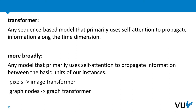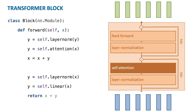The main strategy people tend to use to build transformers is to define a transformer block, which is a set of operations wired together in a certain way, and then repeat that transformer block a number of times. The exact architecture of a transformer block differs from model to model, but in most cases it looks something like this. The block takes in an input sequence, feeds it through layer normalization, then through self-attention. Around these two operations there is a residual connection, after which we see another layer normalization and a feed-forward layer with another residual connection around it.